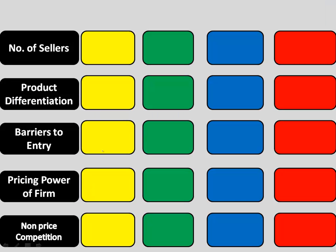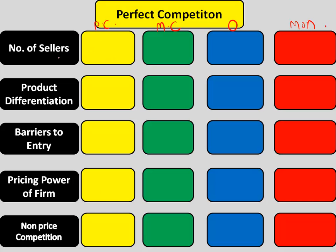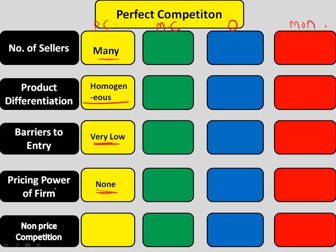We will start with perfect competition. In the metric, yellow is for perfect competition. In a perfectly competitive market there are a large number of sellers, the products are exactly similar and therefore homogenous, barriers to entry are very low, pricing power of the firm is none — a firm cannot really decide how to price its product — and non-price competition does not exist in perfect competition.